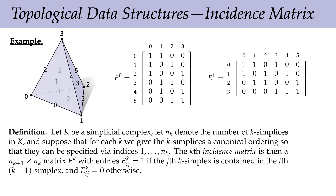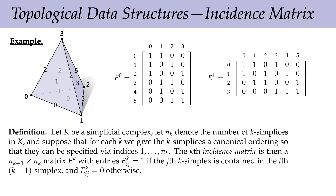Here's the formal definition: let K be a simplicial complex, let n_k be the number of k-simplices in K. Suppose for each k we give the k-simplices a canonical ordering specified by indices 1 through n_k. The k-th incidence matrix is then an n_{k+1} by n_k matrix E_k with entries E_k(i,j) = 1 if the j-th k-simplex is contained in the i-th (k+1)-simplex, and 0 otherwise. The point is that this idea generalizes — you can use it for simplicial complexes of any degree.